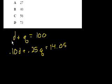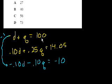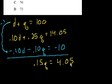If we want to cancel out the d's, we can multiply this top equation by minus 0.1, and I'm doing that so it cancels out with this d right here. So if I multiply that top equation times minus 0.1, I get minus 0.1d minus 0.10q is equal to minus 10. Now we can add these two equations. 0.1d minus 0.1d, those cancel out. 0.25q minus 0.1q is equal to 0.15q equals, what's 14.05 minus 10? That's equal to $4.05.